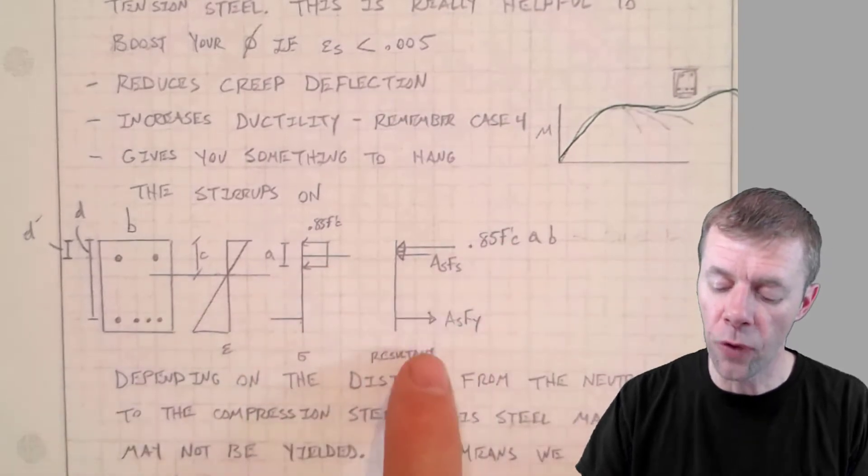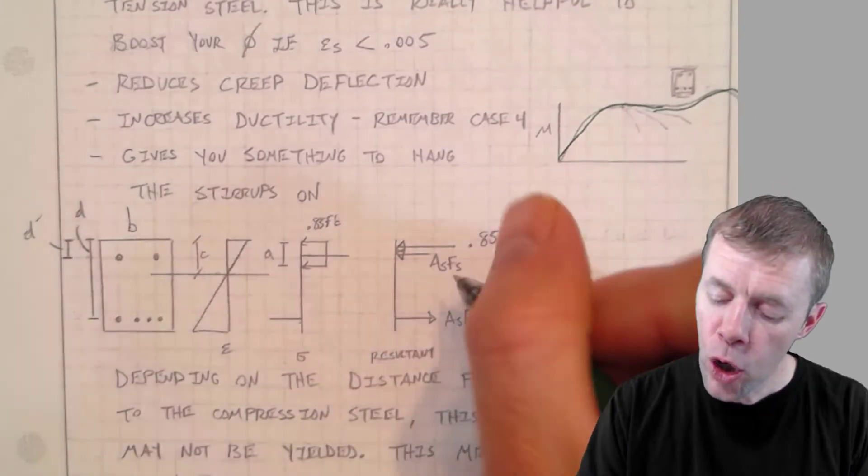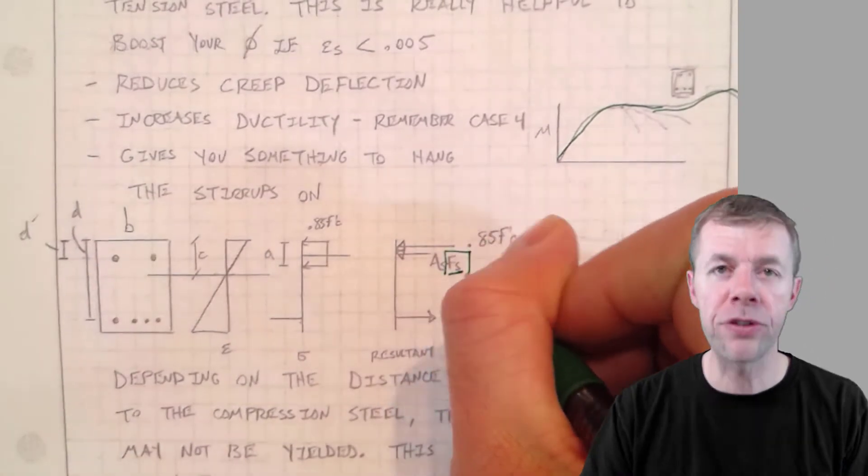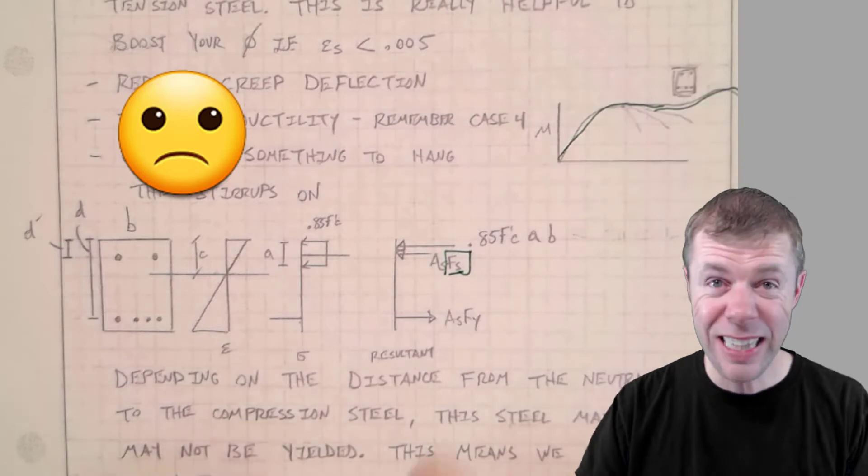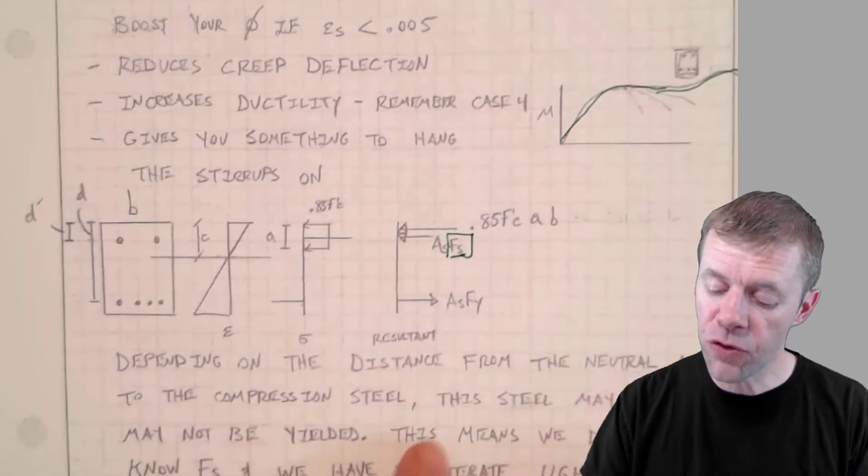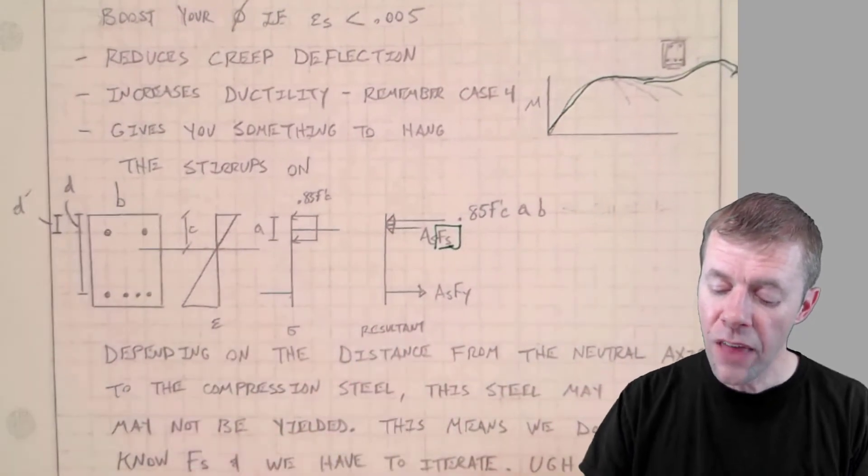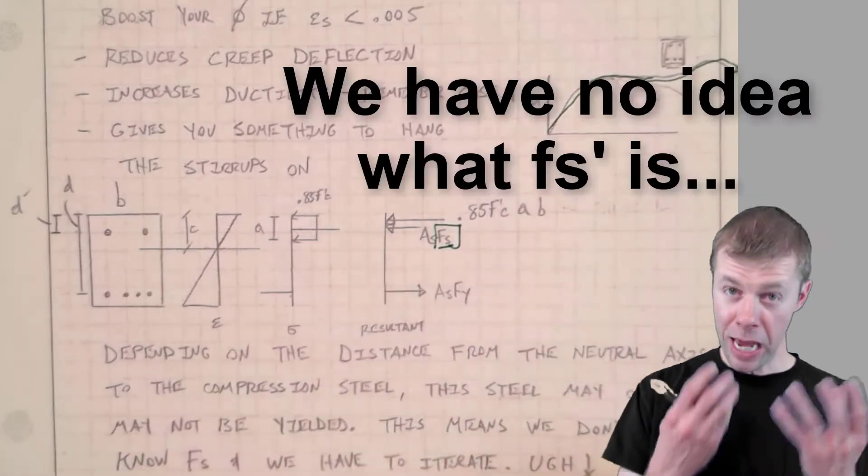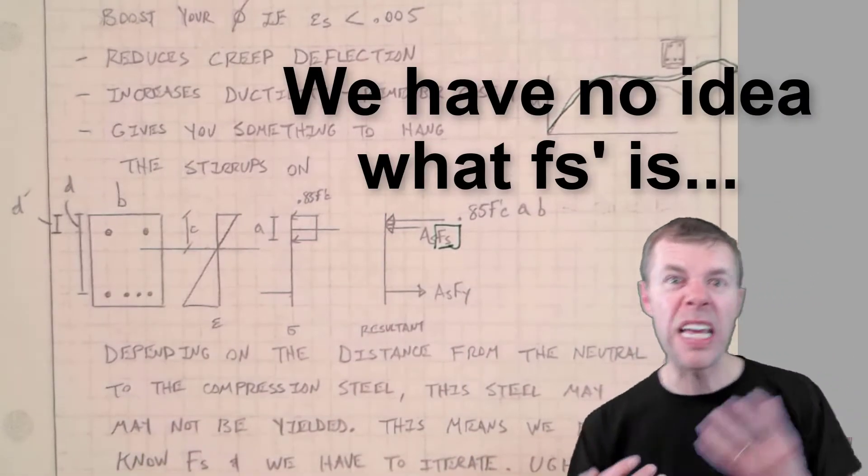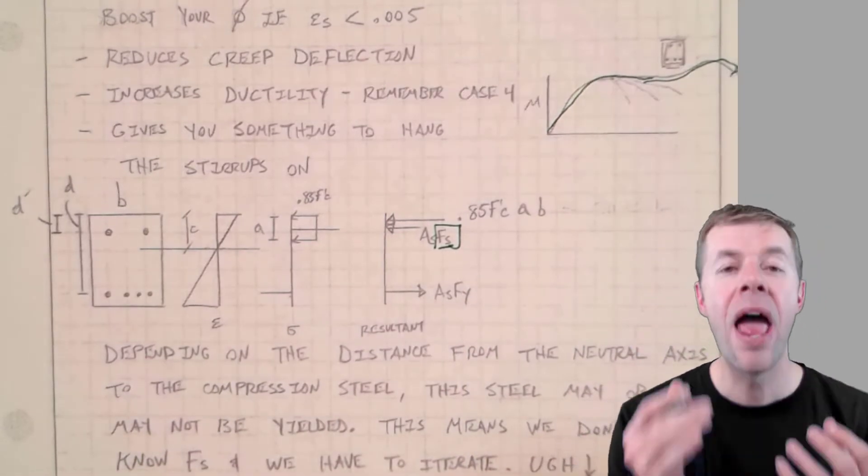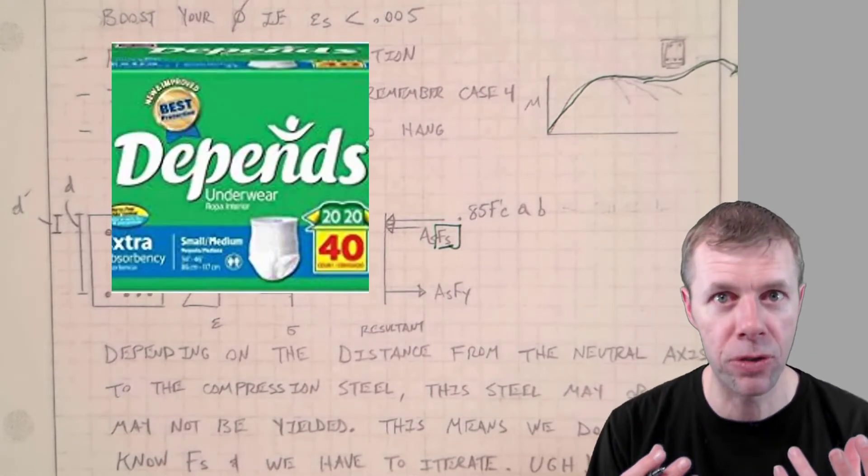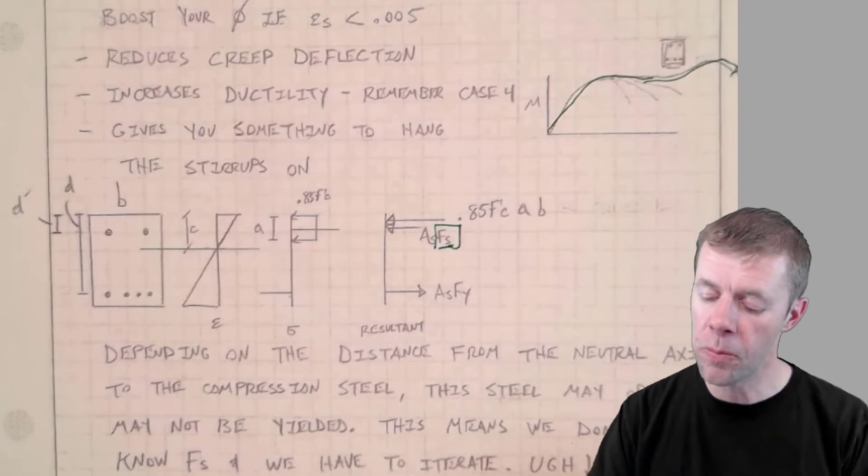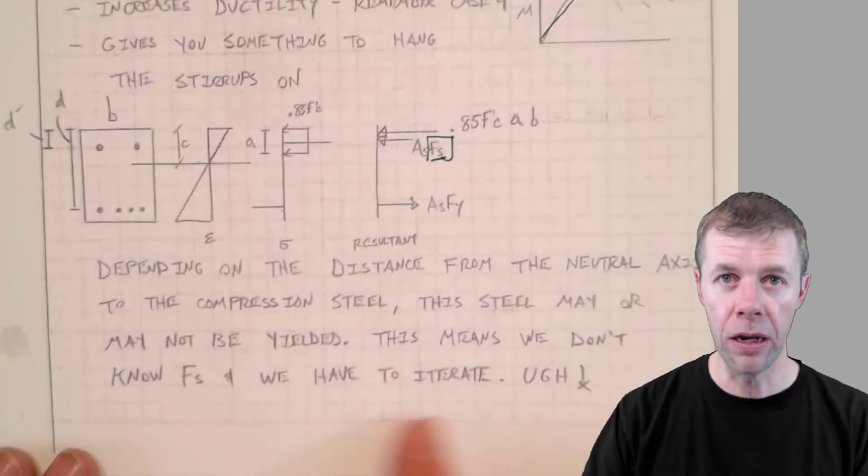Here's the big problem. We don't really know what the stress is in that top steel. We'll talk more about that coming up. That is the issue. But depending on the distance from the neutral axis to the compression steel, that steel at the top, it may be yielded. It may not. It depends. And that's not good. Depends are diapers. And that's not good. And depends also means we have to iterate.